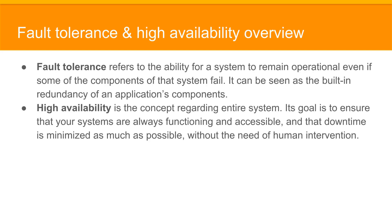Let's define fault tolerance and high availability. Fault tolerance refers to the ability of a system to remain operational even if some of the components of that system fail. It can be seen as the built-in redundancy of an application's components. High availability is the concept regarding the entire system — its goal is to ensure that your systems are always functioning and accessible, and that downtime is minimized as much as possible without the need for human intervention.